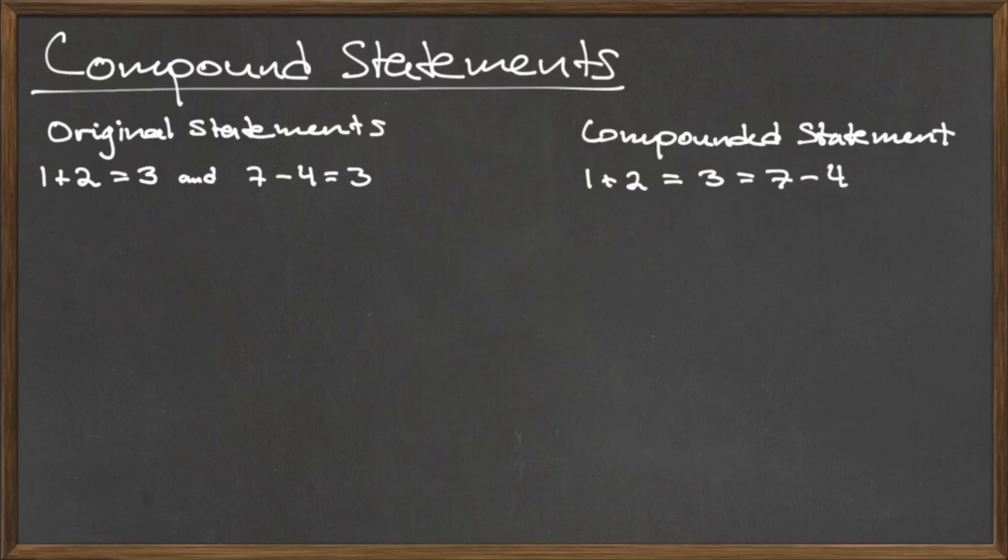We place the result, 3, in the center, surrounded by two equal signs and each of the individual statements. We aren't limited to just statements about equality. Consider the statements 2 plus 7 equals 9, and 10 is greater than 9. The number 9 appears in both of these statements, so we can place that in the center, and create the compound statement 2 plus 7 equals 9 is less than 10. Notice that we changed the greater than symbol to a less than symbol, since the statement 10 is greater than 9 is equivalent to the statement 9 is less than 10.